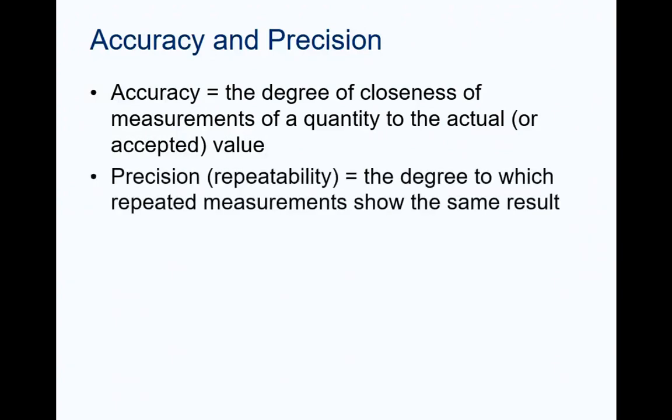Precision indicates how close together repeated measurements of the same quantity are to each other. A precise bathroom scale would give the same weight each time you stepped on the scale within a short time, even if it didn't report your true weight. So, if you placed a 50 pound weight on the bathroom scale five times, and the scale displayed a weight of 47 pounds each time, the scale would be considered to be precise. But, it would not be accurate.